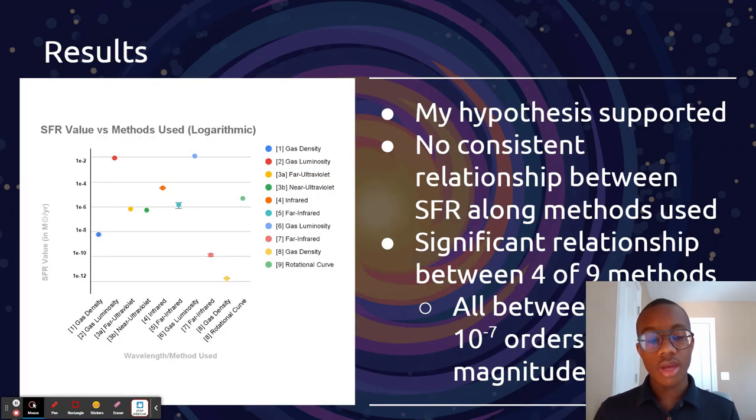For all of my results, there was no consistent relationship between any of these. However, I did notice a significant one between four of my nine methods, between 10 to the negative fifth and 10 to the negative seventh orders of magnitude.